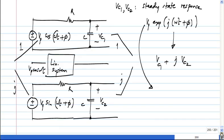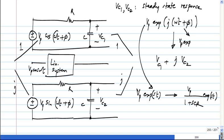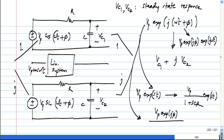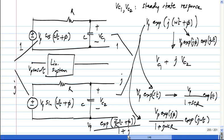So what is the response of the RC circuit to VP·exponential j(ωt + φ)? The steady state response to VP·exponential(St) is VP divided by (1 + SCR) times exponential(St). So VP·exponential j(ωt + φ) is VP·exponential(jφ)·exponential(jωt), and the solution to this is VP·exponential(jφ) divided by (1 + jωCR), which we can also write as VP·exponential j(ωt + φ) divided by (1 + jωCR).